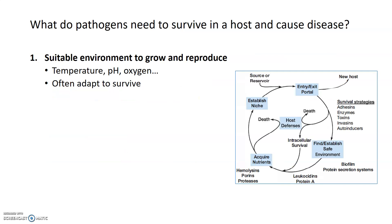From the pathogen's perspective, there are a couple of things pathogens need to survive within the host and ultimately cause disease. The first is a suitable environment to grow or reproduce — bacteria require a specific temperature, a specific pH range, and specific oxygen requirements. In some cases, pathogens will actually adapt inside the host to survive more effectively. For example, facultative anaerobes usually use oxygen if it's available in the outside environment, but can adapt to an anoxic environment and become anaerobic inside a host.